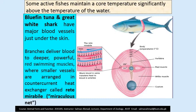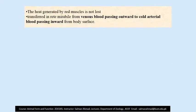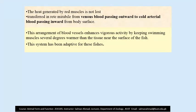In bluefin tuna and great white shark, there is a system of countercurrent heat exchange known as the rete mirabile, in which warm blood in veins transfers heat to the colder blood in the arteries. The heat generated by red muscles is retained through the rete mirabile, transferring from venous blood passing outward to the cold arterial blood passing inward from the body surface. This arrangement of blood vessels enhances vigorous activity by keeping swimming muscles several degrees warmer than the tissue near the surface of the fish.